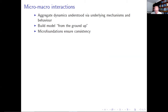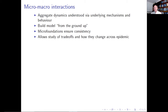So what we're going to do is start from the micro level. We're going to look at individuals — people living in a population where there's an infectious disease — and look at how people respond to the spread of the disease, and then scale up. We'll aggregate across people, and use that to inform our thinking about aggregate dynamics.